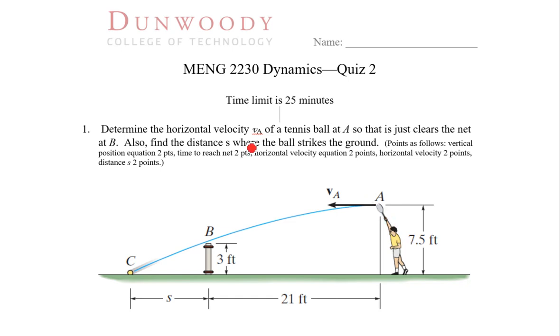We're told here the velocity is all horizontal velocity, VA at A. So there's going to be no VY, or initial VY. It hits it such that it just barely goes over the net, and we're assuming the ball is a particle, so it has no dimension to it, so the center of the mass is the same as the outside edge of the ball, which obviously is not the case, but that's how we're going to model it.